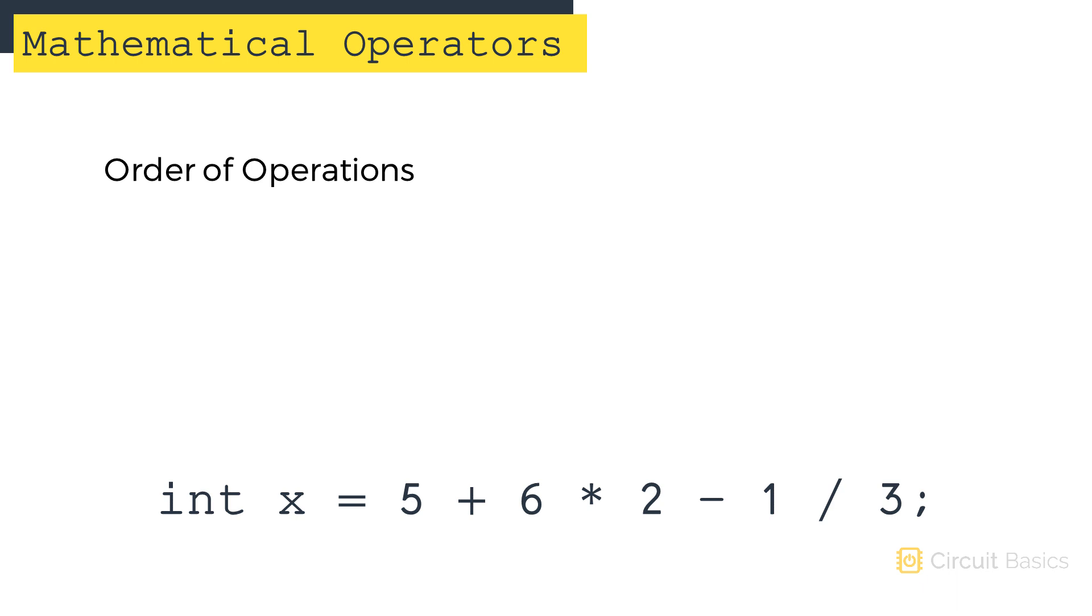When you use expressions with more than one operator, like this one, the order of operations becomes important, because the result will come out differently depending on which operations are performed first. For example, if we add 5 and 6 first, the result is 21.67. But if we multiply 6 and 2 first, the result becomes 16.67. So what's the correct order?